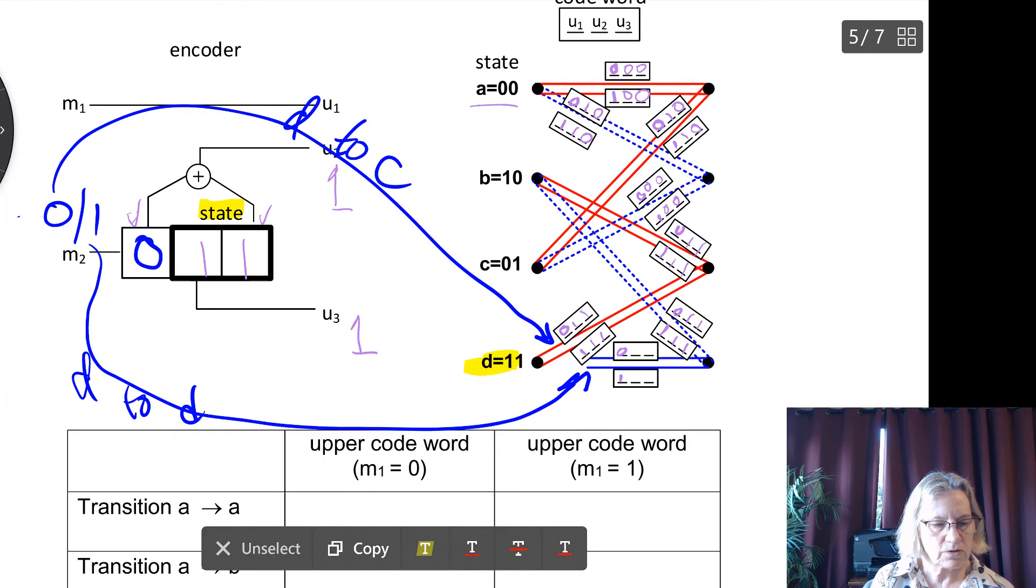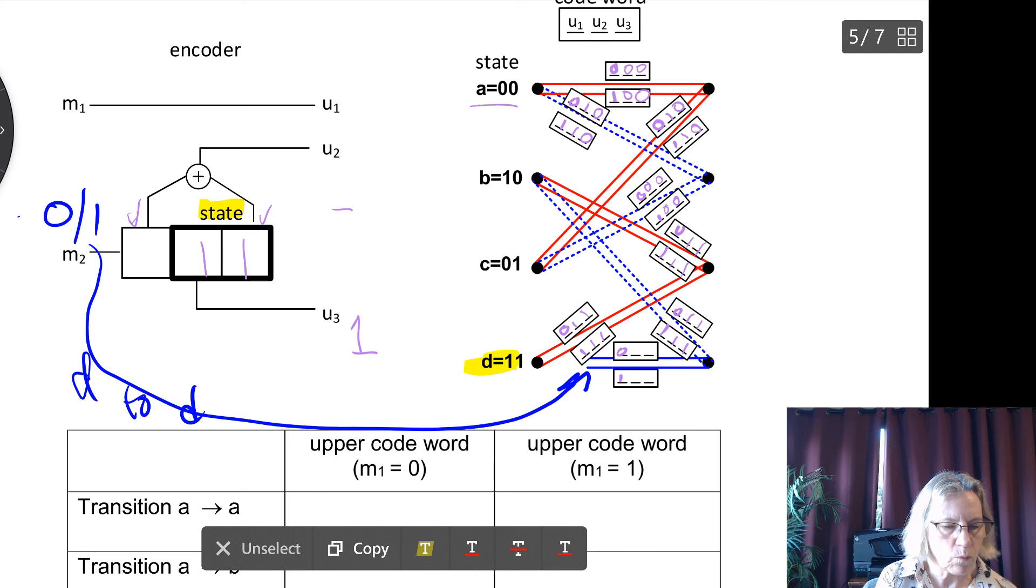And let's go to the next case. And the next case is instead we have a 1 at the input. And with the 1 at the input, of course, we have 1 plus 1, which is giving me a 0 now for U2. And the U3, of course, doesn't change. So now my code word is 0, 1 for this transition.